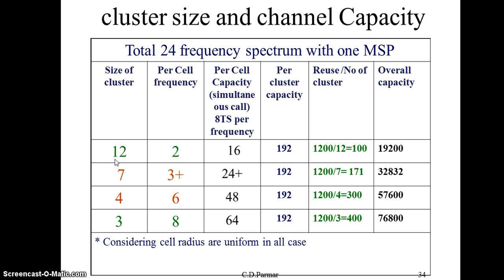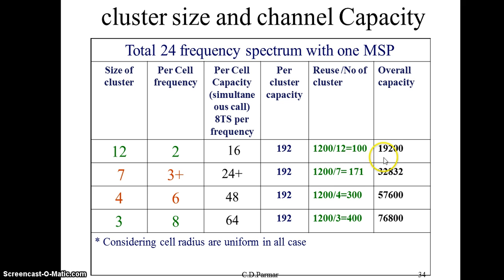For a 12-cell cluster, each cell has two frequencies and 16 users. There are 12 cells per cluster, so 16 multiplied by 12 gives 192 users per cluster. With 1200 total cells in the state divided by 12, we can have 100 such clusters in the state. So 192 users per cluster multiplied by 100 gives 19,200 customers who can communicate at the same time in the state.